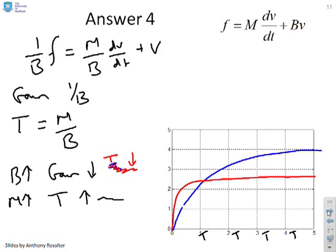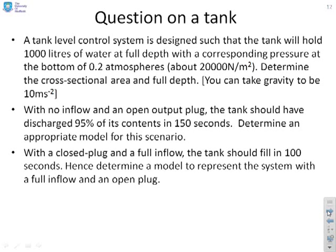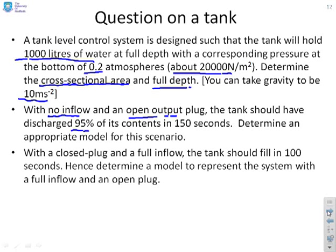Now a question to make you think harder. It gets you to think about what parameters are in a model and what you can infer from them. We have a tank level system: the tank holds 1,000 litres at full depth, and the corresponding pressure at the bottom is 0.2 atmospheres or about 20,000 N/m². Can you use this data to determine the cross-sectional area and the full depth? Gravity is taken as 10 m/s². We'll also use discharge and fill observations to build a model.